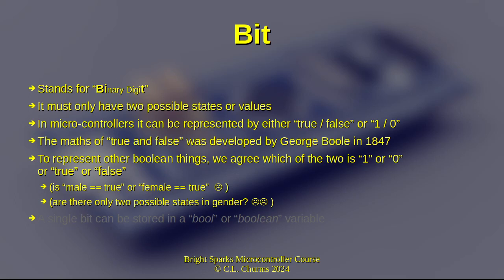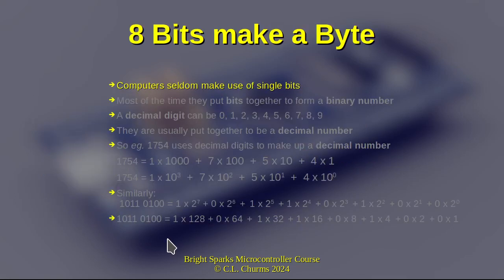A single bit in our Arduino language and many others can be stored in a variable type bool or Boolean, obviously named after George Boole. We don't only work with bits — computers very seldom make use of only single bits. More often, bits are put together to form a binary number.